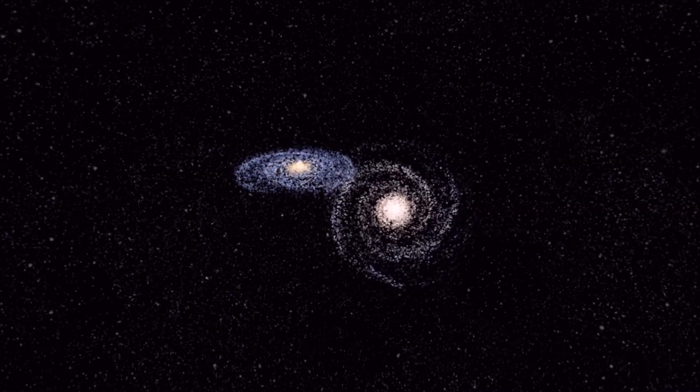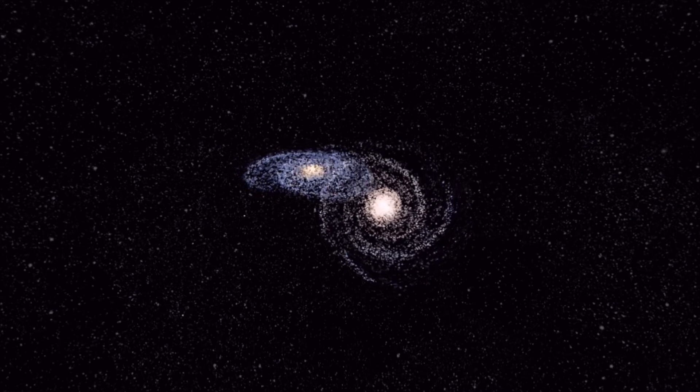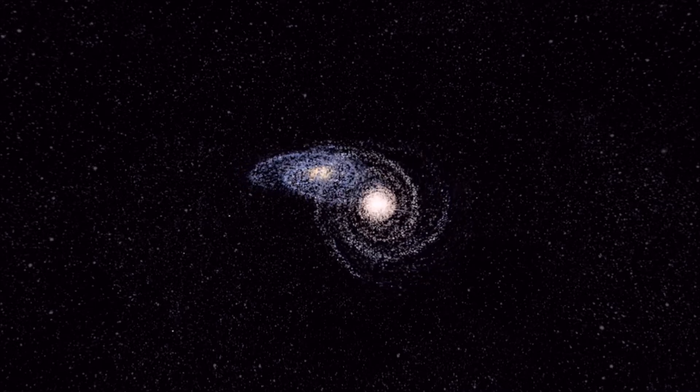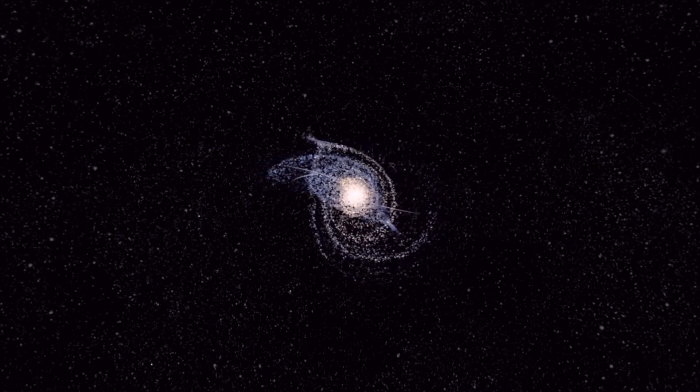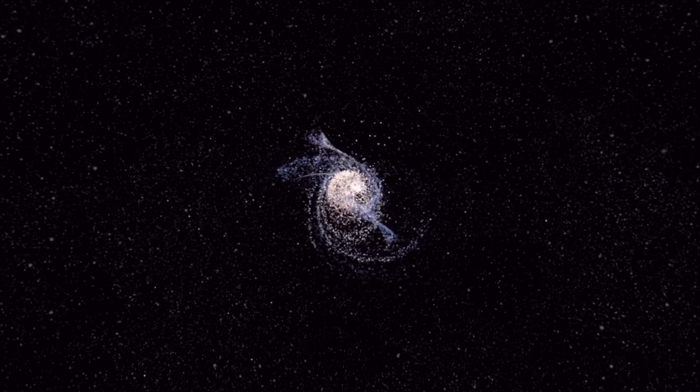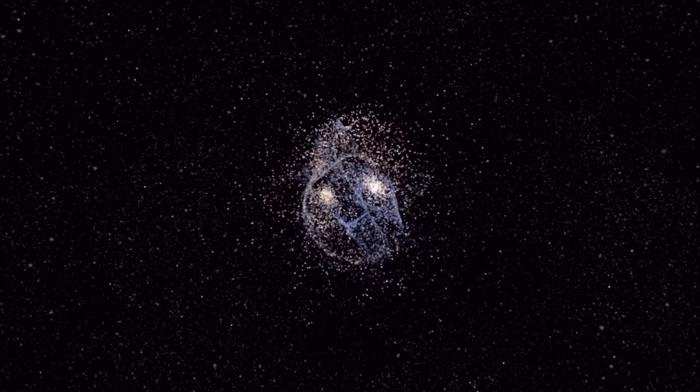When galaxies interact with each other, stars and stellar systems can be displaced from their galaxies. These rogue systems might end up orbiting their parent galaxy, but some may be flung even further into intergalactic space.